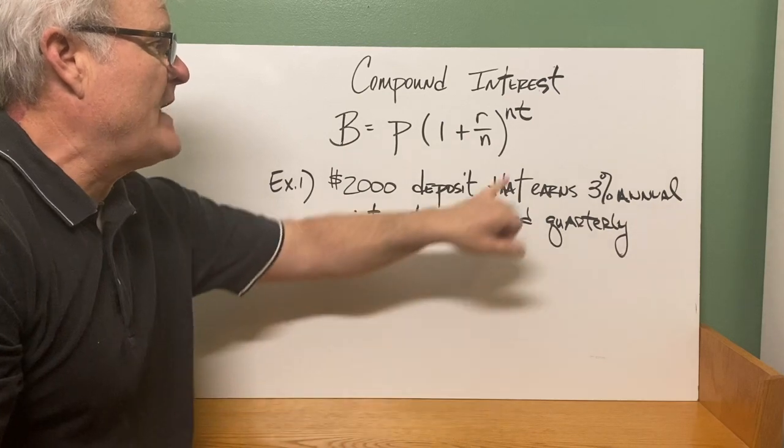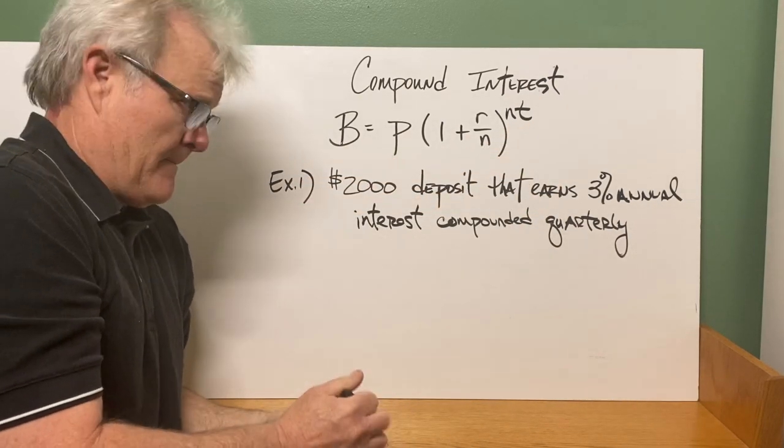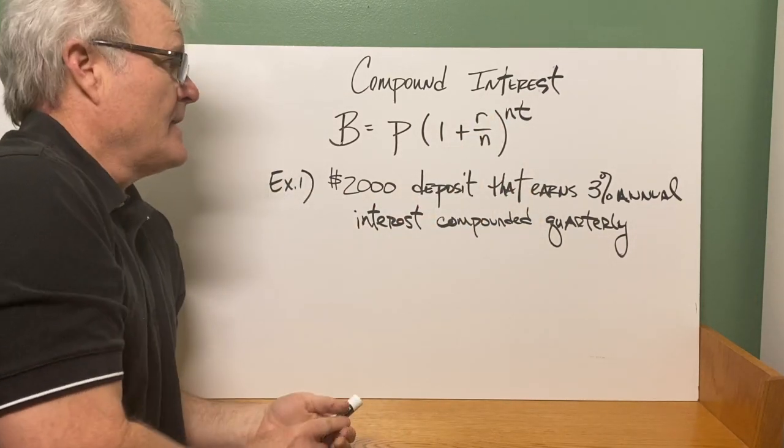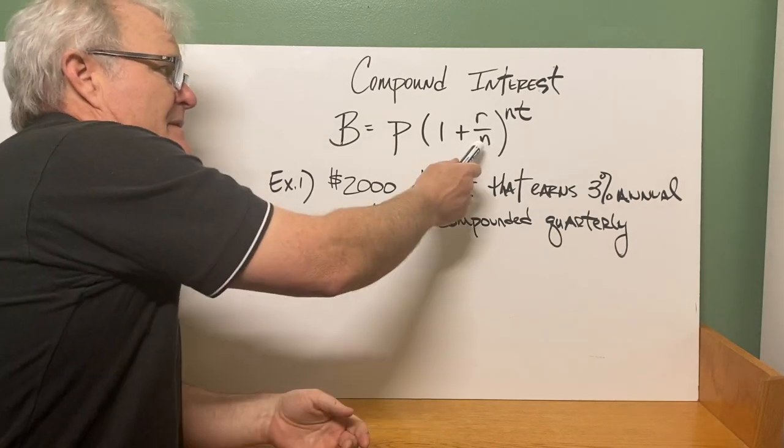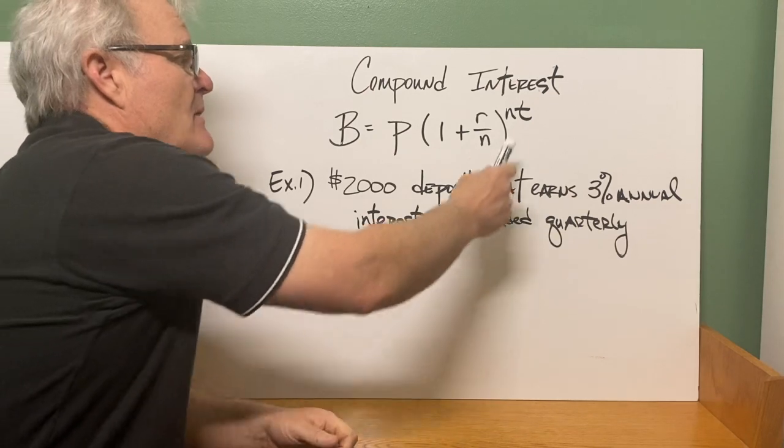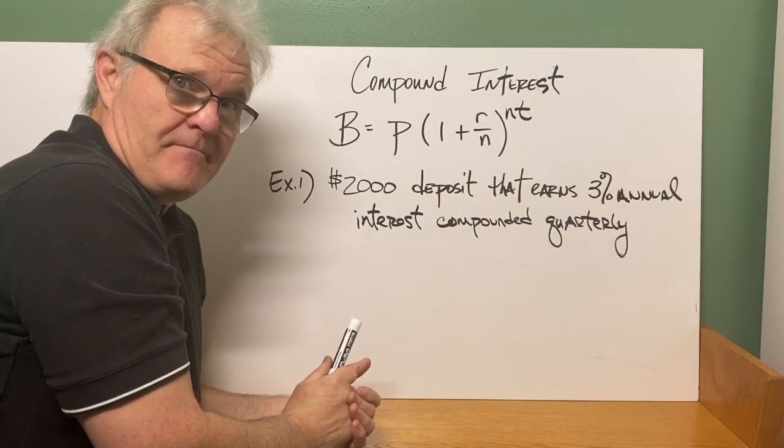And then we're going to raise that to the number of times it's compounded times T, which is the number of years, because this is how often your money would be compounded. So suppose it was compounded quarterly. So that would be four times every year. So if you had your money in there for five years, it would be four times five. That would be raised to the 20th power.